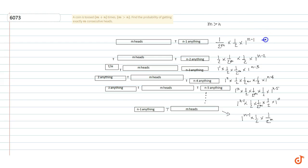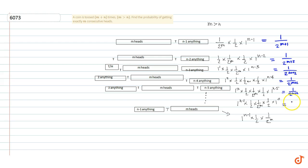So we can see that the first case equals 1 over 2 to the power m plus 1, the second case equals 1 over 2 to the power m plus 2, and all intermediate cases also equal 1 over 2 to the power m plus 2. The last case equals 1 over 2 to the power m plus 1. There are n minus 1 such middle cases, plus one first case and one last case.